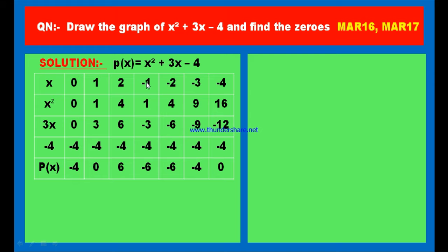The points are: (0, minus 4), (1, 0), (2, 6), (minus 1, minus 6), (minus 2, minus 6), (minus 3, minus 4), and (minus 4, 0). Now let us plot these points on the graph sheet.